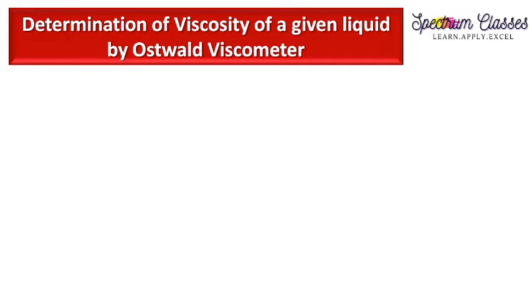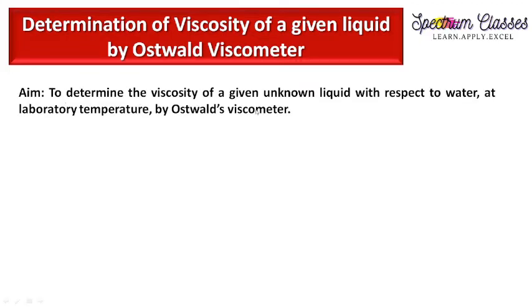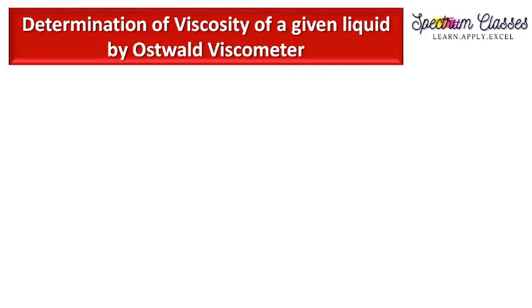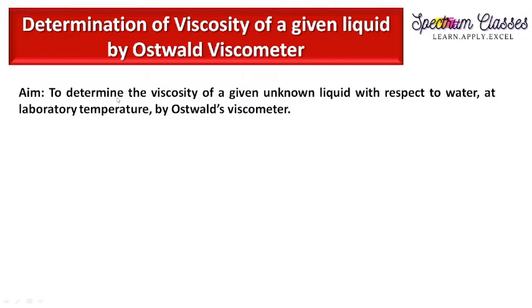Welcome back to Spectrum Classes. In this video we are going to perform an experiment. The aim of the experiment is to determine the viscosity of a given unknown liquid with respect to water at laboratory temperature by Oswald viscometer. What is called viscosity I have discussed in detail in my previous video, and the link of that video I will give in the description box.